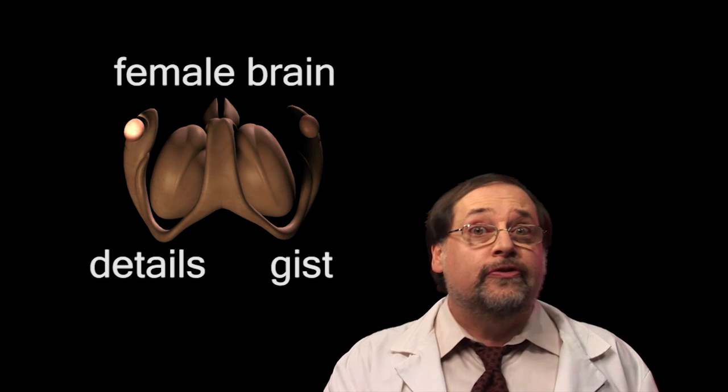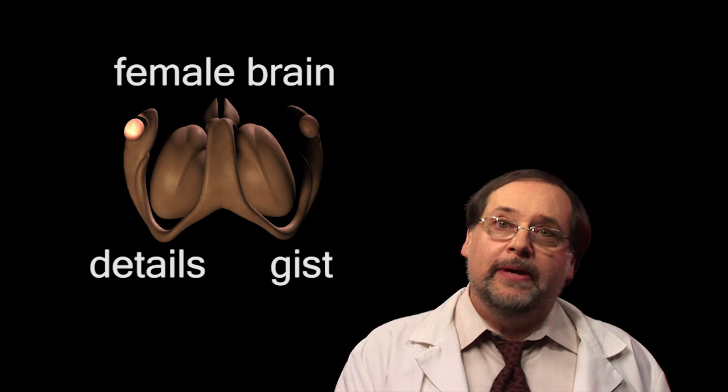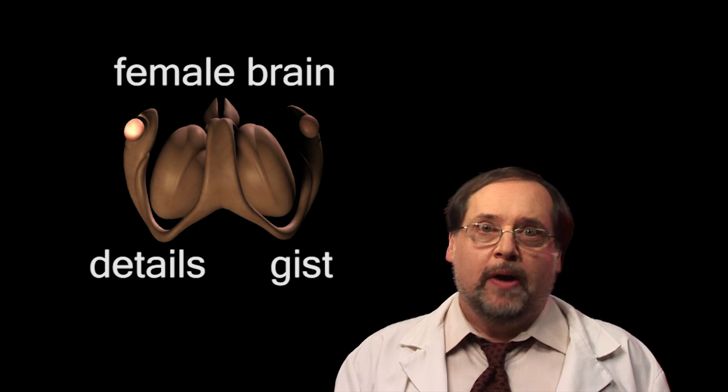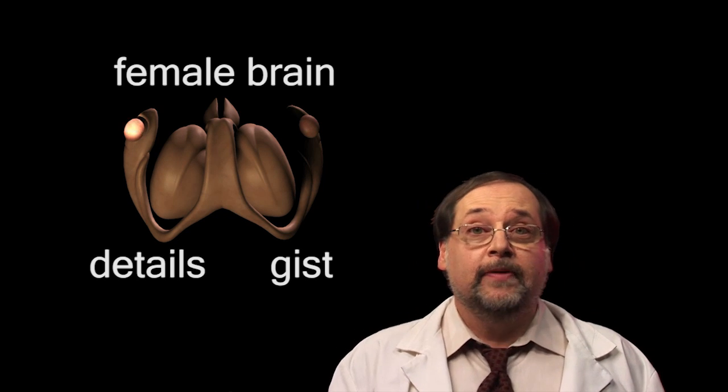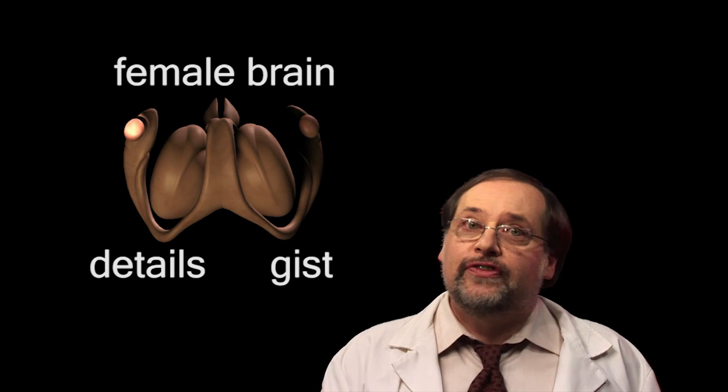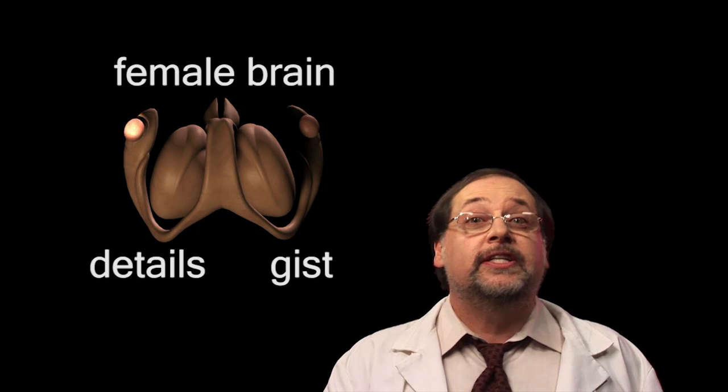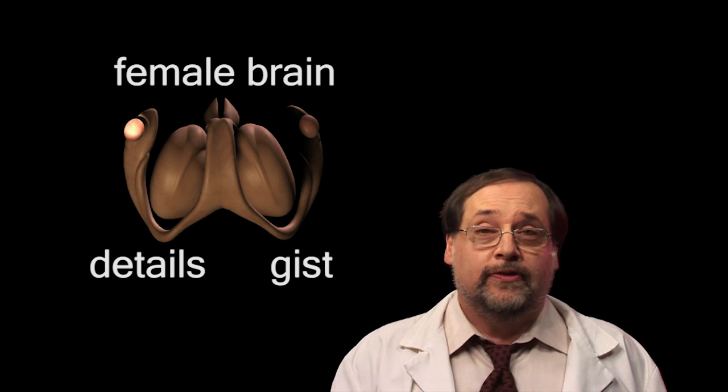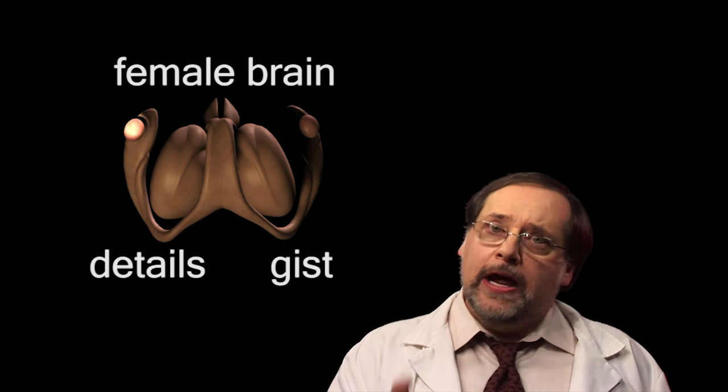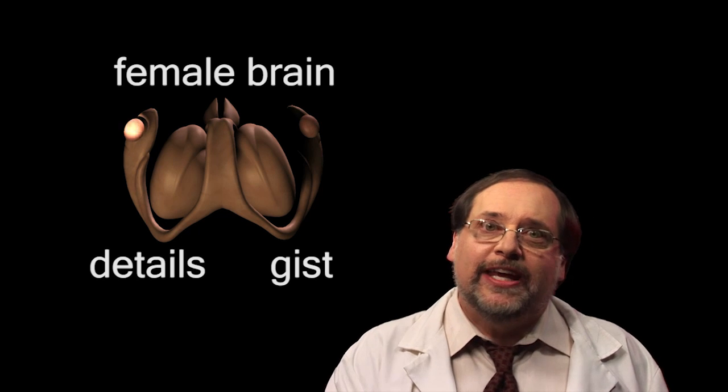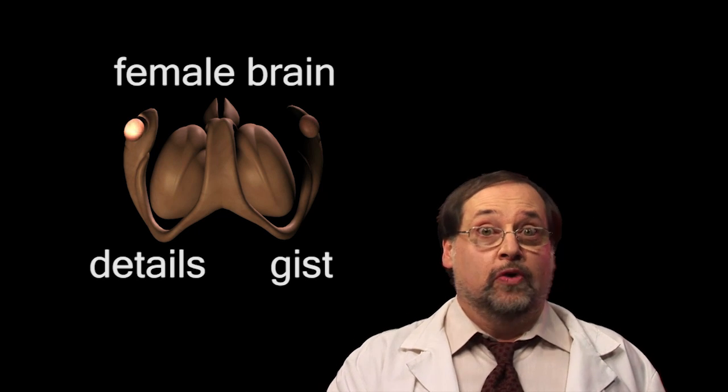First, the female amygdala is involved in emotional responses, just like the guys. Second, the left side of the brain processes the details of the emotional responses. Third, their responses to traumatic events is exactly the opposite of what is seen in the guys.